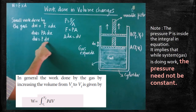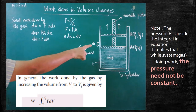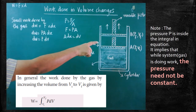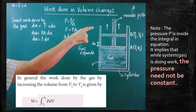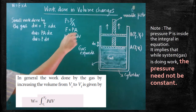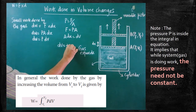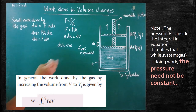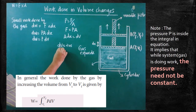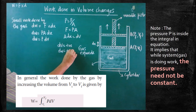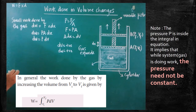Here, dV is nothing but the small change in volume. The volume increases from Vi to Vf — Vi means initial volume, Vf is the final volume. Here, volume is increased. Therefore, the change in volume is positive. Because volume increases, the change in volume is positive. Therefore, work done is also positive — if dV is positive, the work done will also be positive.